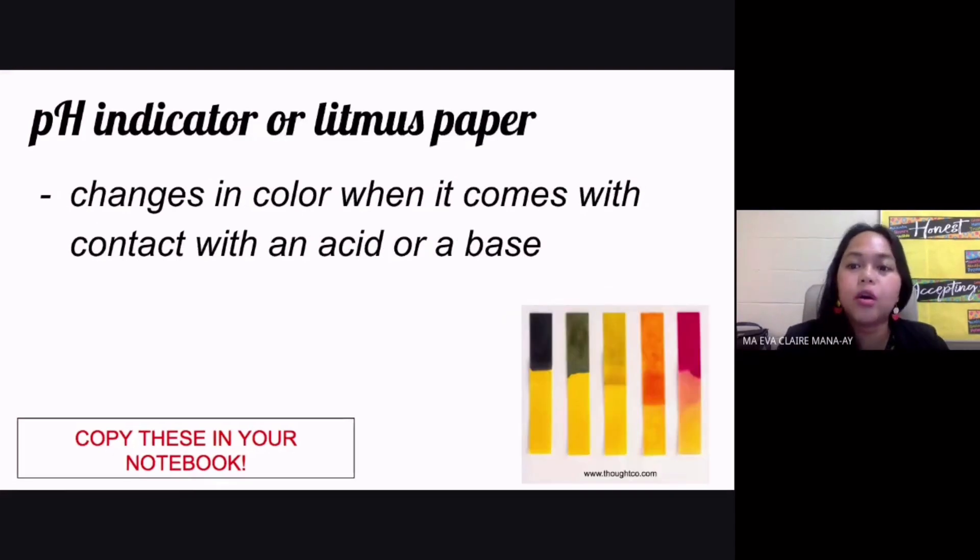Now we go to the next slide. We sometimes use a pH indicator or sometimes we use litmus paper, and these are some things that we can use. They change their color when they come in contact with an acid or base.